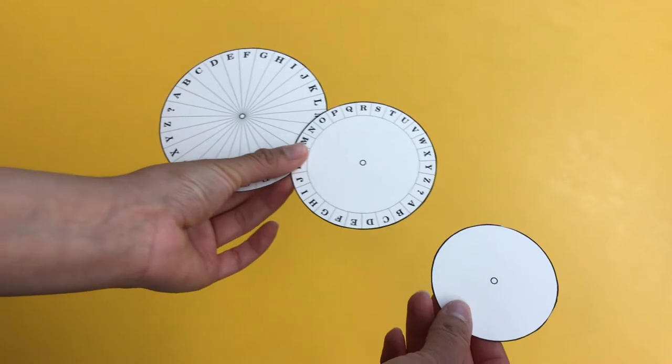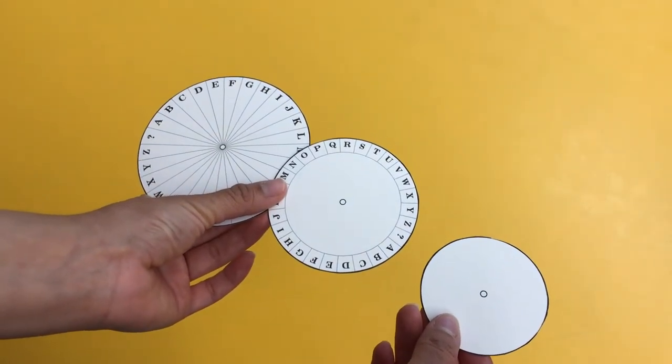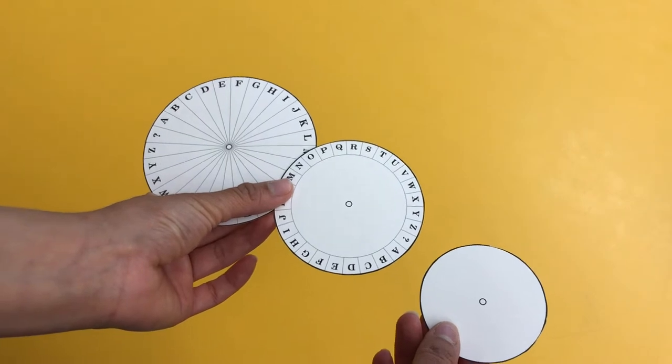Color the wheels using two different colors. I'm going to use blue for the big wheel and red for the medium wheel. Don't forget to color the small one too.